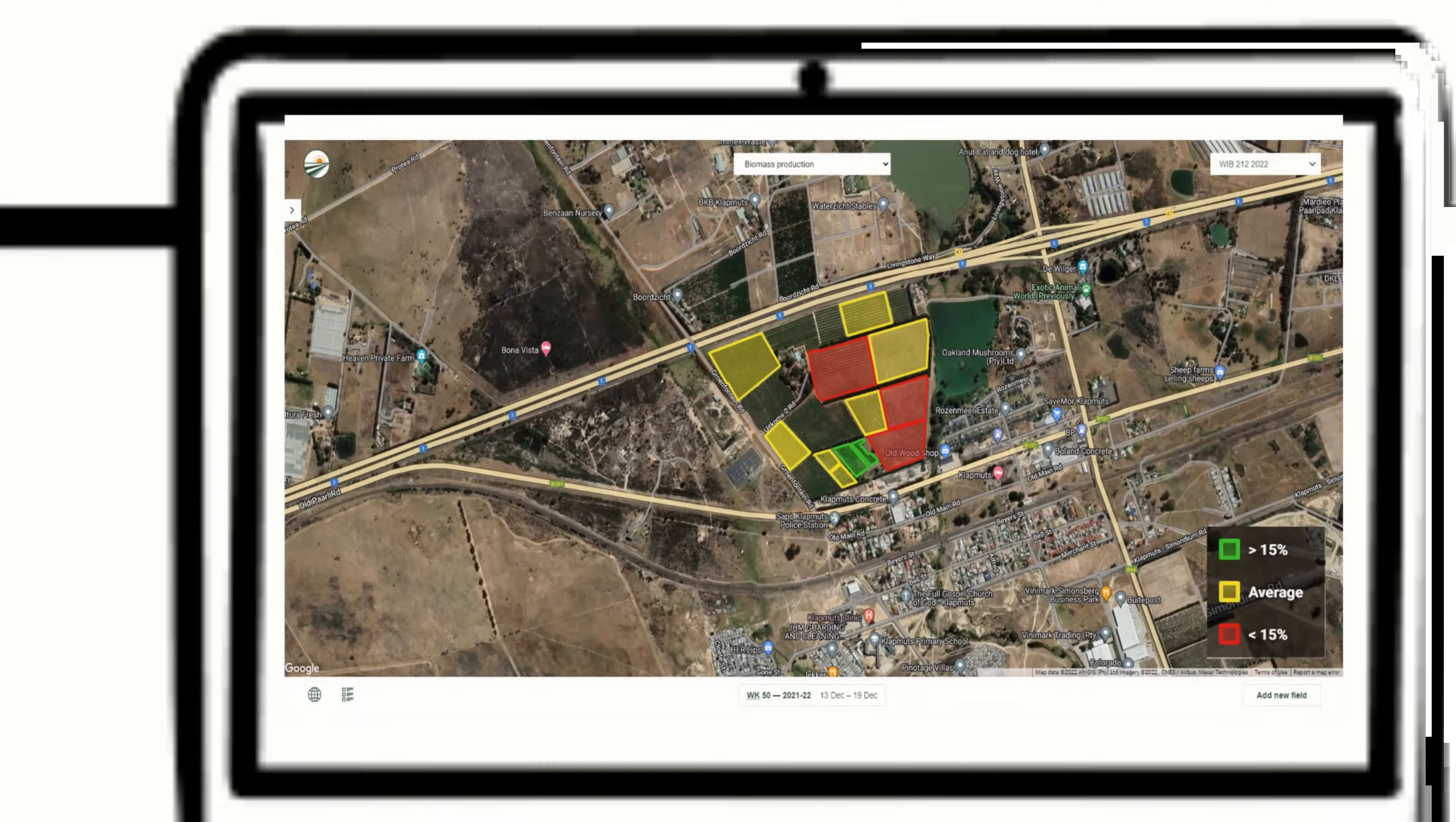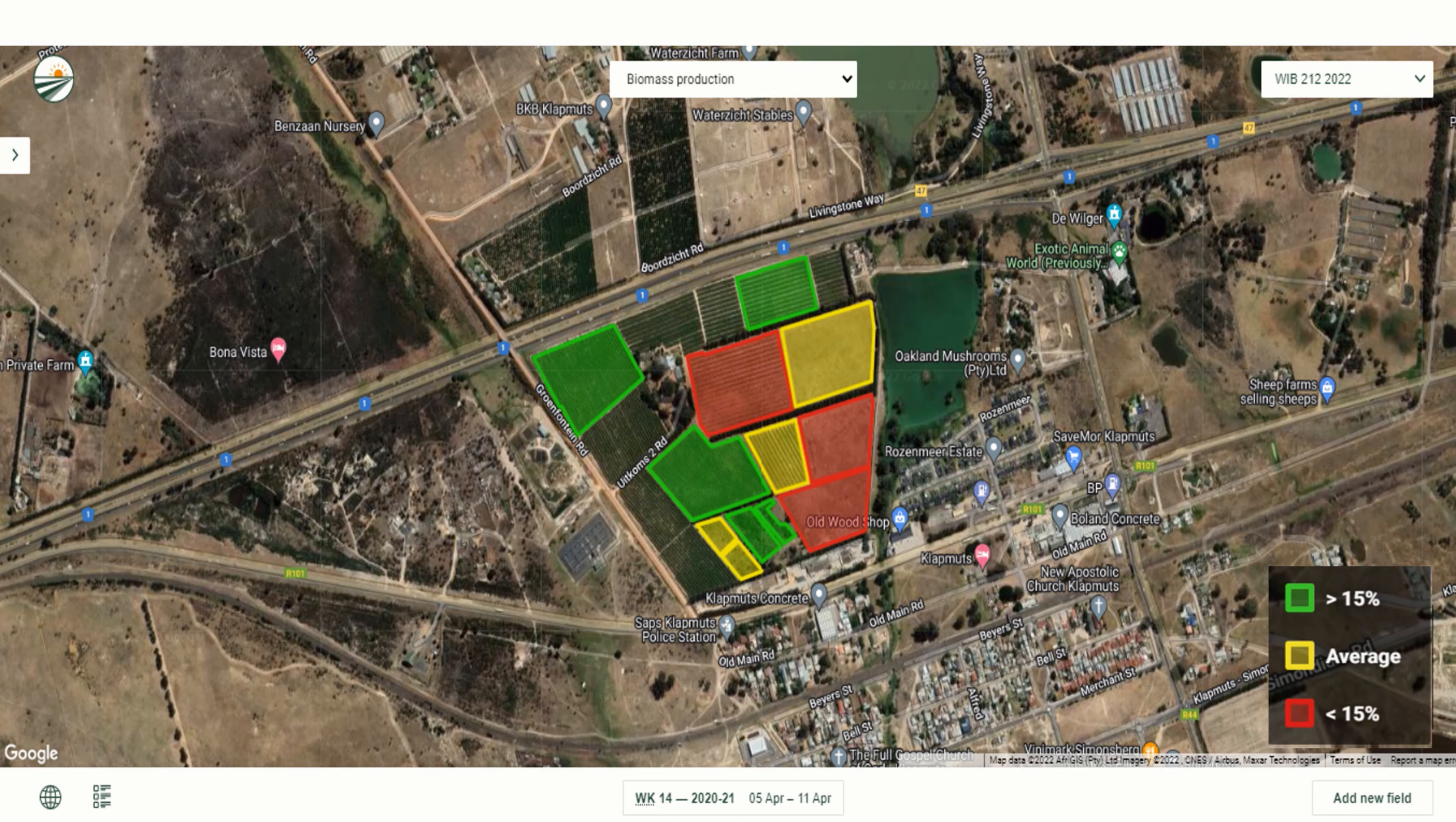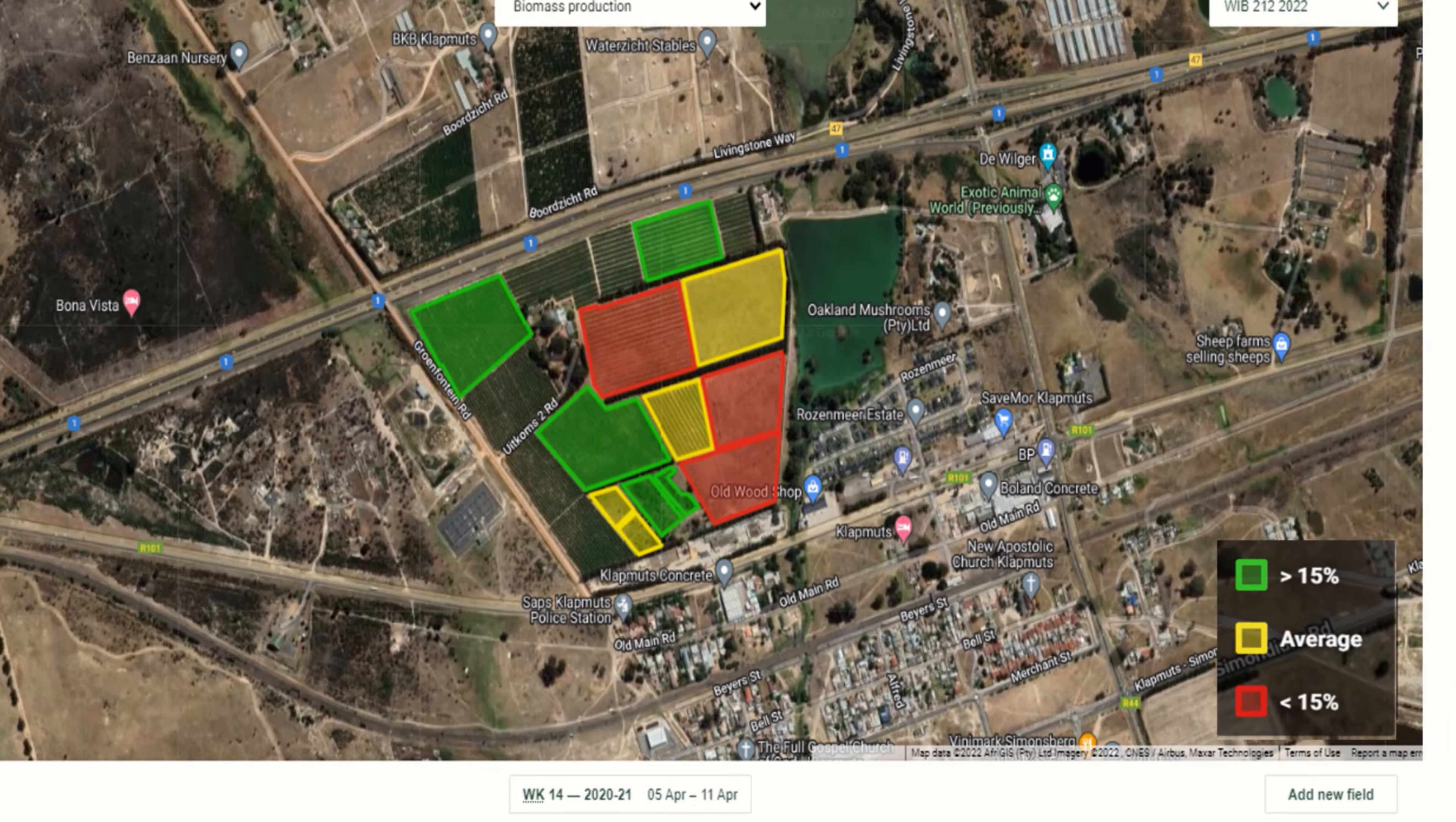And that a block's color might even be different every week following a Fruitlook data update? Depending of course on the parameter that you are viewing, yellow represents the average value, green represents 15% higher than the average value, while red represents 15% lower than the average value.